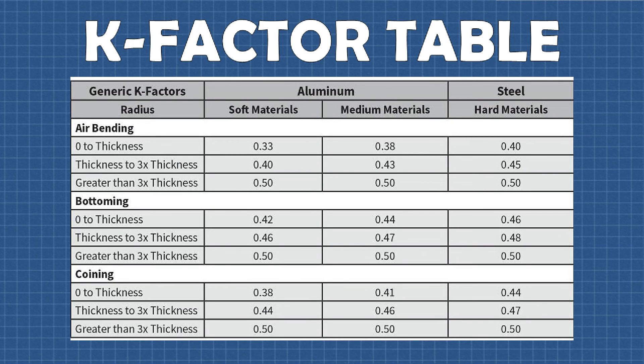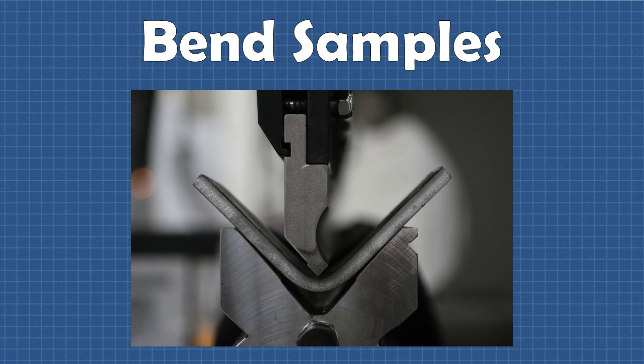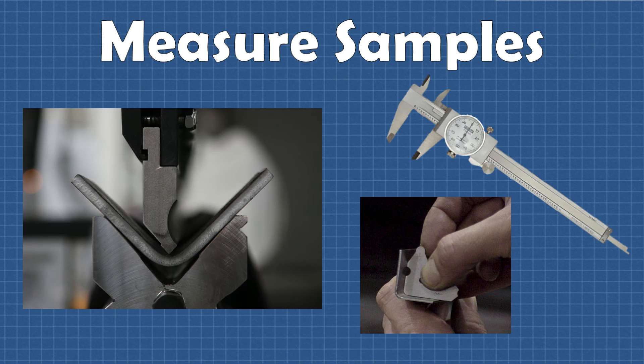I think too often people just look for a generic k-factor table and use that. And these tables will generally get you in the ballpark, but it's important to realize that changing any of the variables I mentioned will actually change the k-factor of the bend. So that's the reason why it's very important to do the testing. Bend real samples, account for all the variables, and measure the results. This way you can be confident in your designs and your blank development sizes.